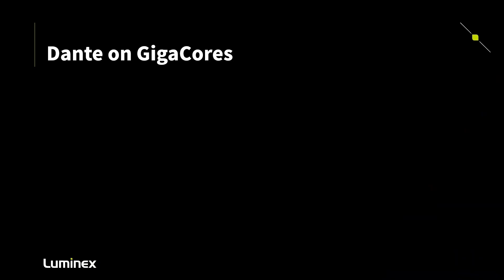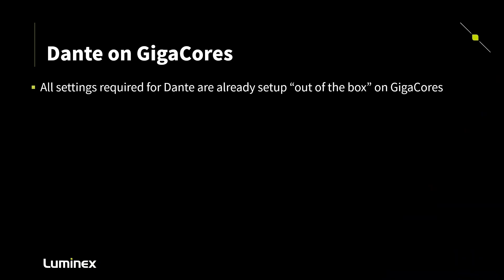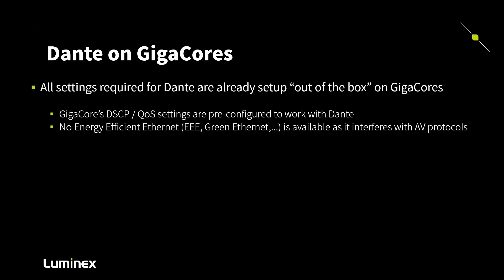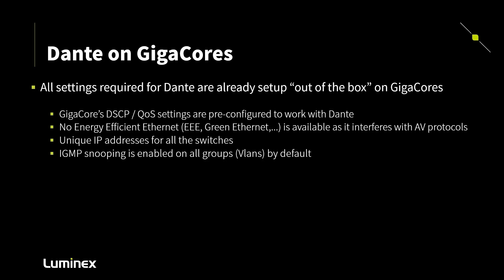In conclusion, what do we need to do when we want to set up Dante on a Gigacore switch? All settings required for Dante are already set up out of the box. Quality of service settings are already pre-configured to work with Dante. There's no Energy Efficient Ethernet (EEE/Green Ethernet) available, as it interferes with AV protocols. All switches have unique IP addresses, IGMP snooping is enabled on all groups, and a default IGMP querier will be elected for each group.